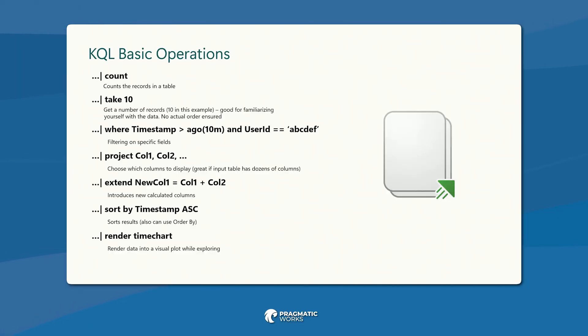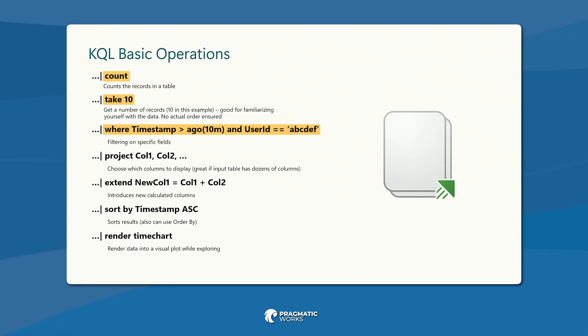There's a small breakdown of some very basic operations. You put the name of the table first. Then you can do a count, or a take — which is like a TOP — that just returns a specific number of rows with no real sorting. There's a WHERE clause. Project equates to your SELECT statement. Extend is like a calculated column. Sort is of course like ORDER BY, which you can also use here. And there's a render capability for visualizations.